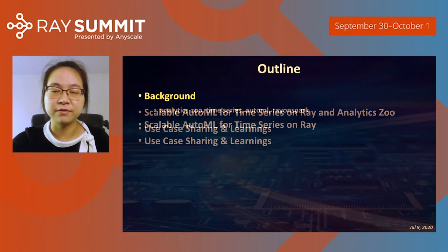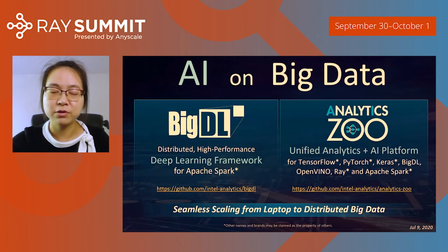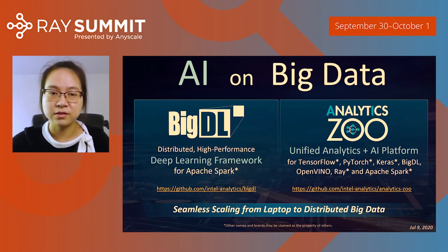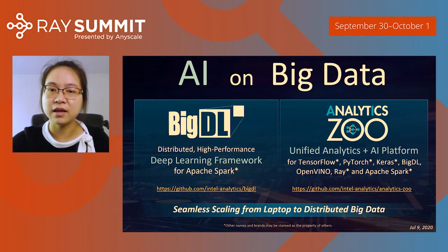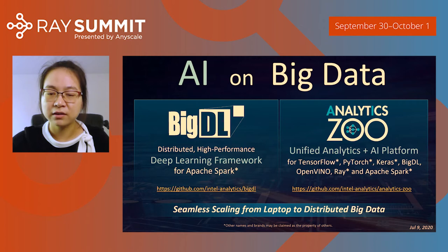Let's come to the first part, the background. At Intel, we have been focusing on building various technologies to bring AI on big data. We have open-sourced a distributed deep learning framework for Apache Spark called BigDL. It has feature parity with popular deep learning frameworks like TensorFlow, PyTorch, and Keras. On top of these frameworks, we also developed a high-level unified analytics and AI platform called Analytics Zoo. Analytics Zoo integrates deep learning frameworks as well as distributed frameworks like Ray, Apache Spark, and Flink.